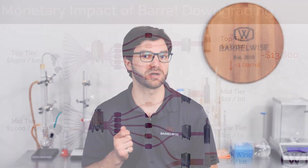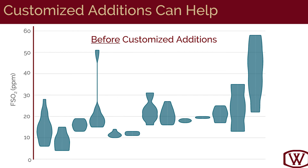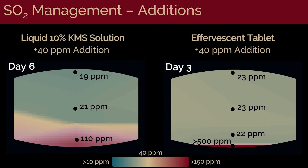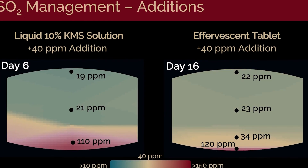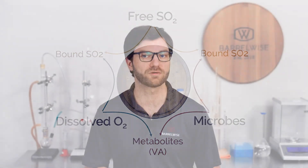Thank you everyone for making it this far. As a quick recap: we saw how free SO2 is important in controlling risk in a barrel program and how preventing barrel downgrades has significant financial impact; that composite sampling can exacerbate variance; conversely, how barrel by barrel sampling and custom additions can reduce variance; some experimental results showing how sulfites can stratify in a barrel, affecting protection levels and free SO2 measurements; and finally, how information on dissolved oxygen and microbial activity can be garnered from free SO2 records alone. That's all we have time for today, so thank you everyone for watching, and hopefully we'll see you soon.